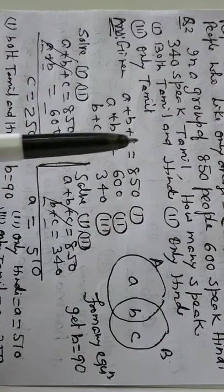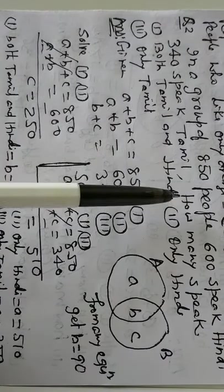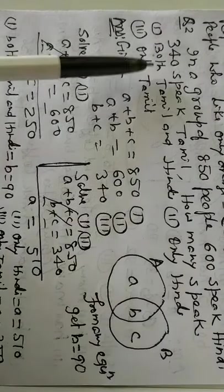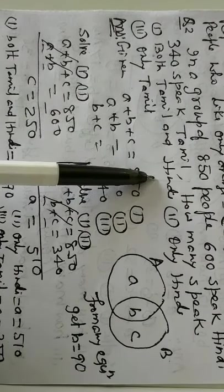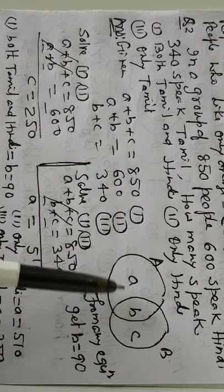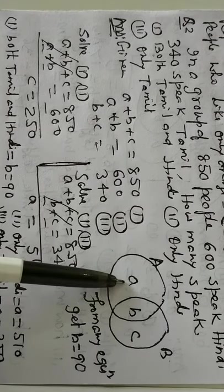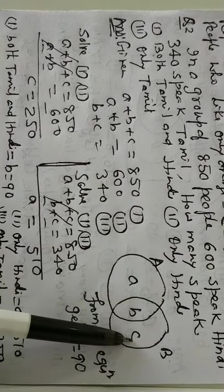Now second question, there are 850 people, 600 speak Hindi, 340 speak Tamil. How many speak both Tamil and Hindi? Only Hindi, only Tamil. Now draw two sets, write A, B, C as earlier.